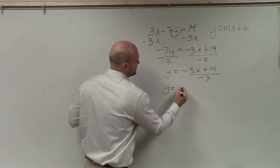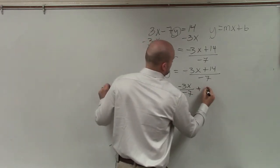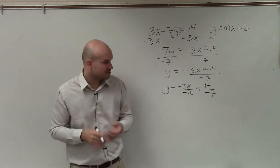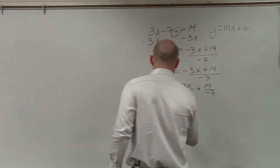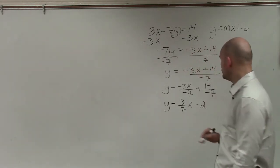So when doing that, I can break it up like this. So you divide negative 7 into both of those terms. Then as we go and simplify, I have y equals 3/7x minus 2.